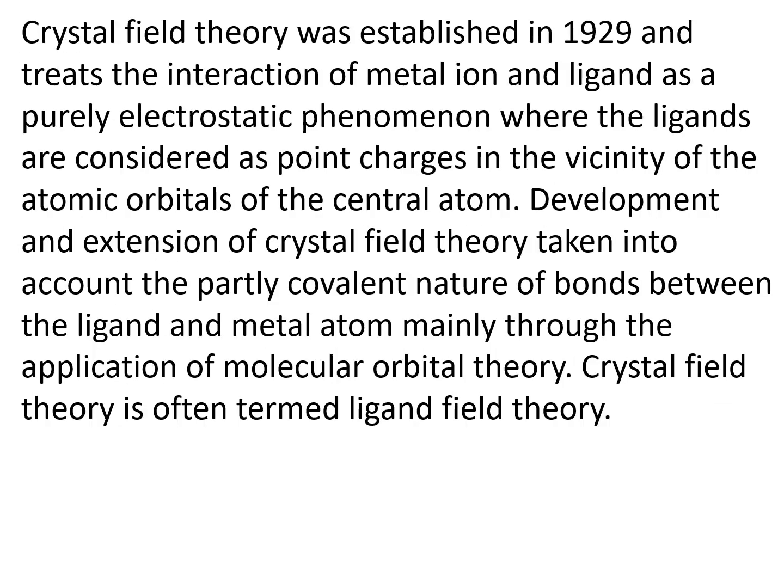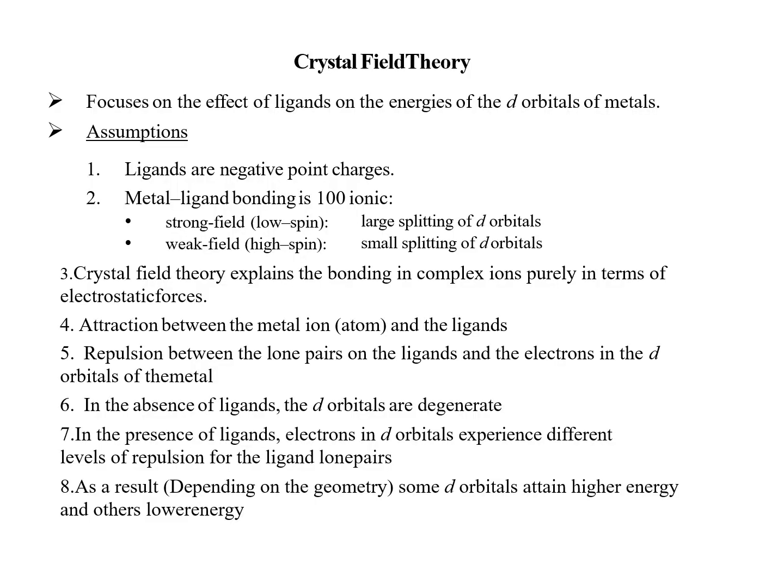The crystal field theory was established in 1929. It treats the interaction between the metal ion and ligand as purely electrostatic, where the ligands are considered as point charges in the vicinity of the atomic orbitals of the central metal atom. The crystal field theory is often termed ligand field theory. It focuses on the effect of the ligands on the energies of d orbitals of the metals. Assumptions: ligands are negative point charges, and metal-ligand bonding is 100% ionic. There are two fields: strong field and weak field. Strong field is low spin; weak field is high spin. Strong field is due to large splitting of d orbital; weak field is due to small splitting of d orbital.